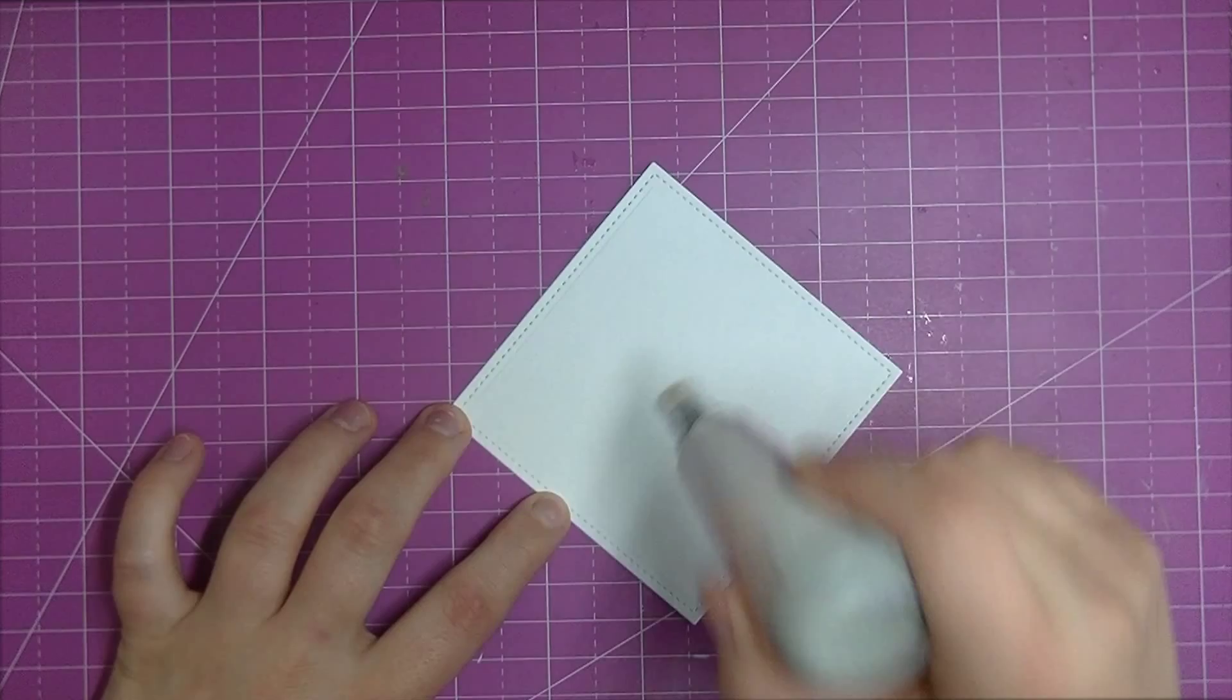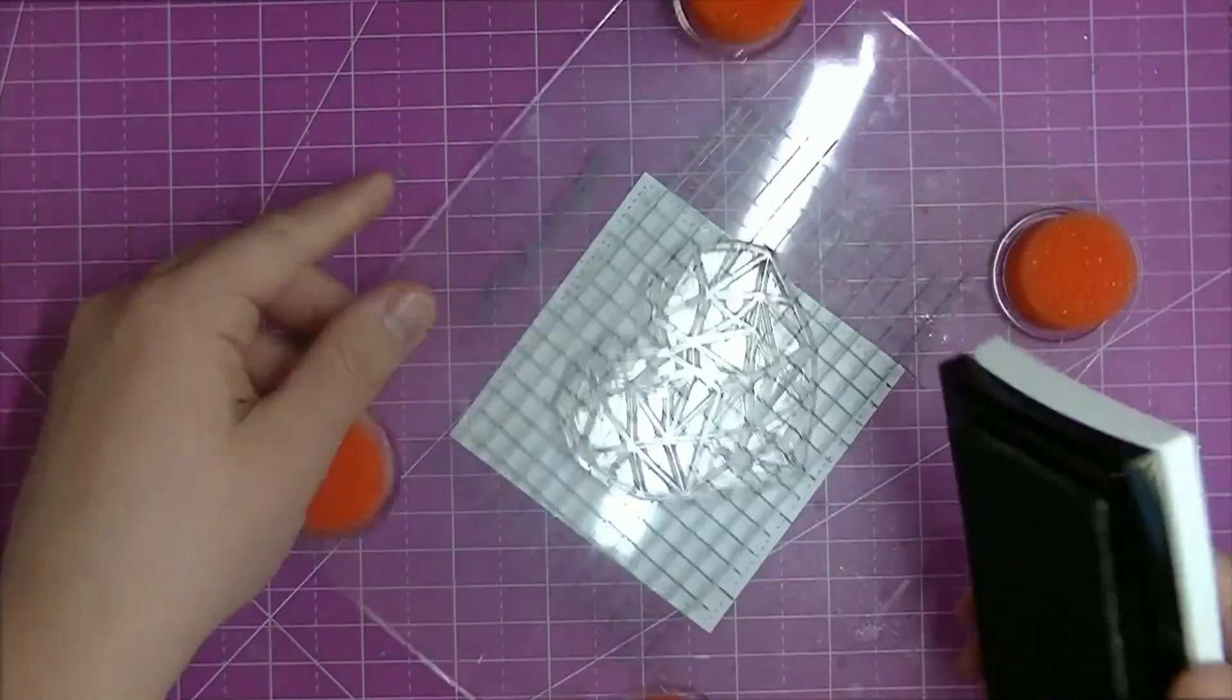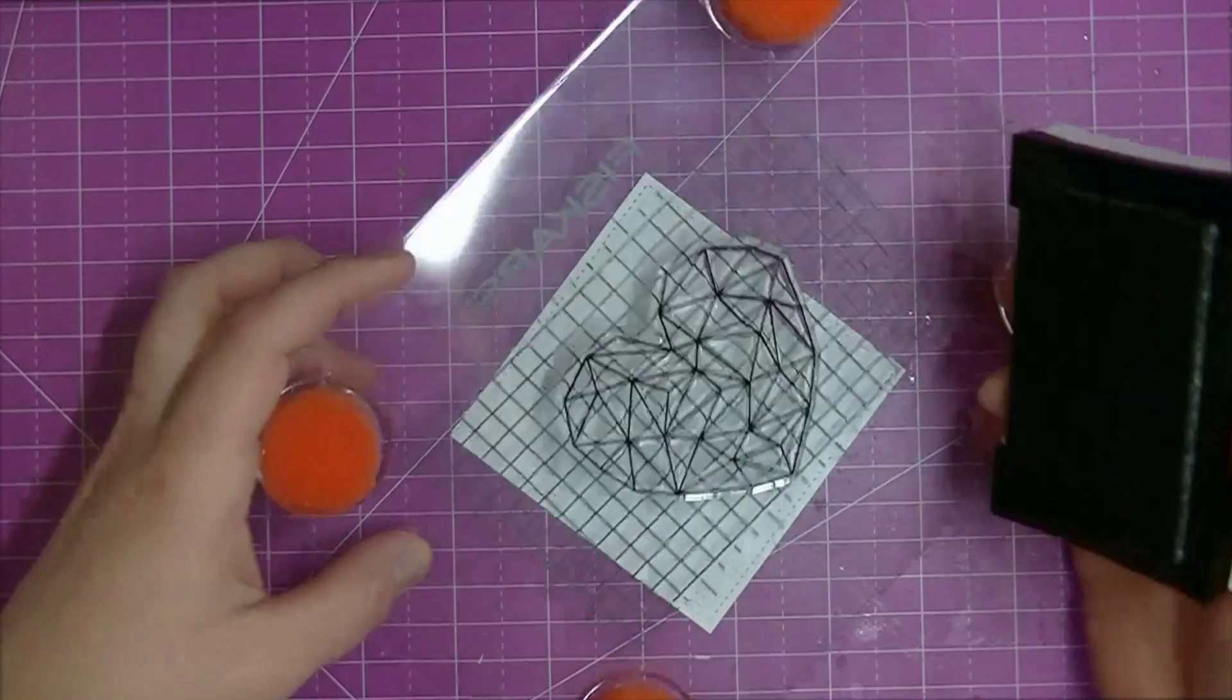I chose the Tim Holtz watercolor paper because it's white versus the watercolor paper that I have which is an off-white color. Next I took the Heart of Gold stamp set from Neat and Tangled.